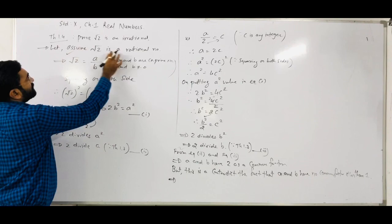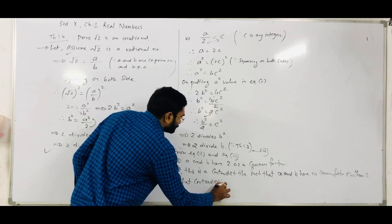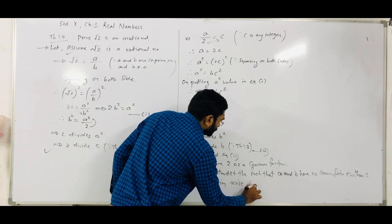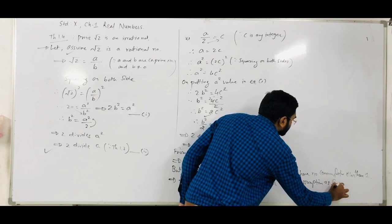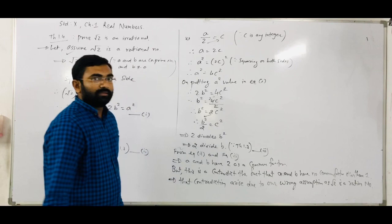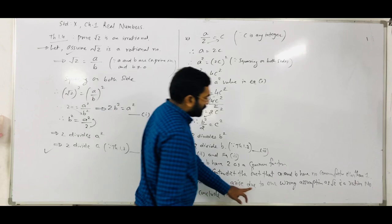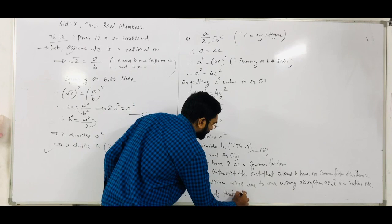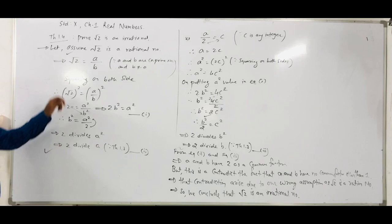The contradiction arises due to our wrong assumption that root 2 is a rational number. So we conclude: root 2 is not a rational number — root 2 is an irrational number. That way, we can prove the irrationality of any number.